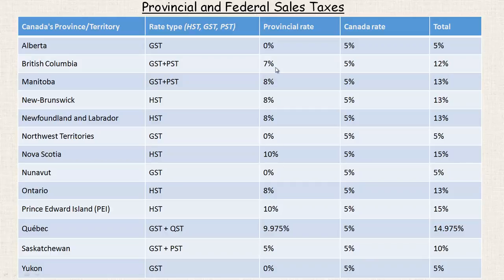Some provinces and territories have provincial or territorial sales taxes and some don't. For example, Alberta doesn't have a provincial tax — they just have the 5% GST, so the total will be 5%.